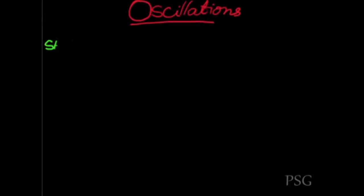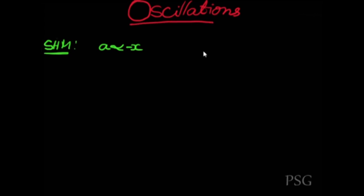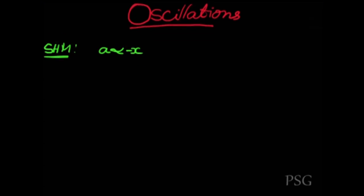Next, what is simple harmonic motion? Simple harmonic motion is a type of oscillatory motion in which the acceleration of the body is directly proportional to the magnitude of the displacement, and acceleration is always directed towards the mean position, also called the equilibrium position.